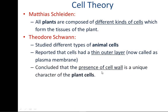Schwann showed a clear difference between plant cells and animal cells. For plant cells, the presence of a cell wall is a unique character. In case of animal cells, only a thin outer layer is there — that means absence of a cell wall. The outer covering of animal cells is always the plasma membrane, while for plant cells it is always the cell wall.